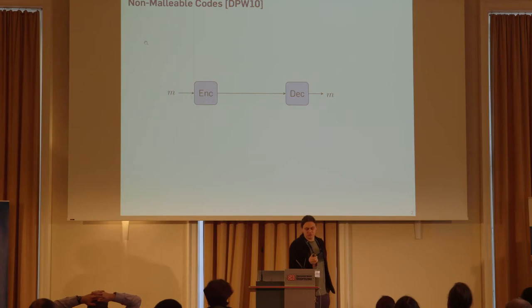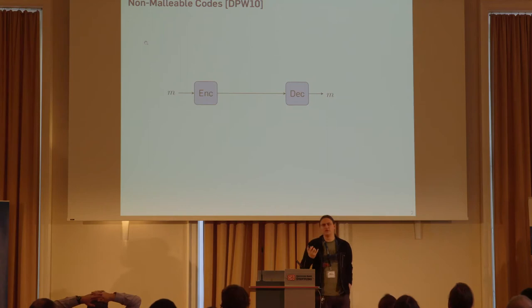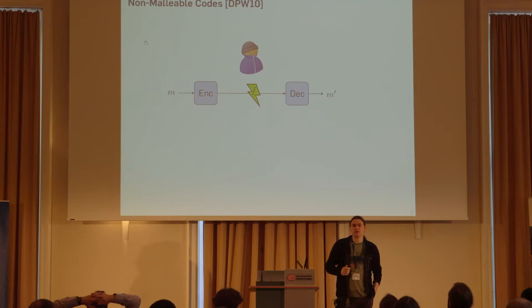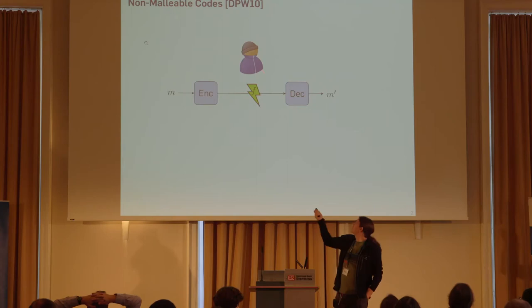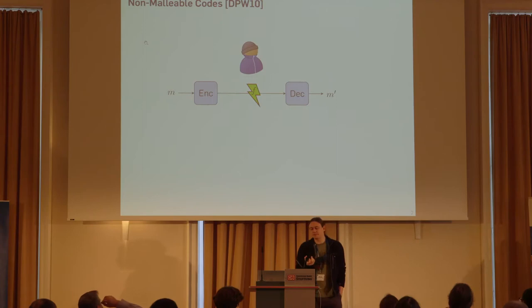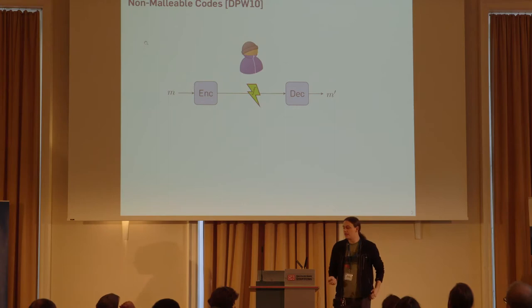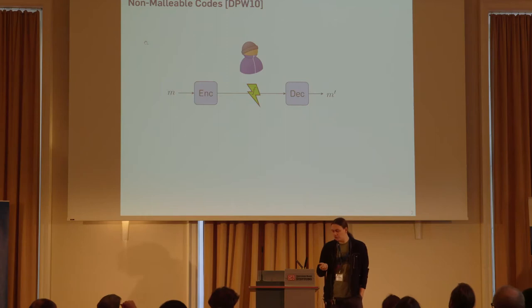The notion of non-malleable codes was first introduced by Cimbrowski, Piaczak, and Wix in 2010. It's basically a code: we have a message, we encode it, we can decode it again, and if the code works correctly, we get the same message back. But somebody could tamper with the code after it has been encoded. This attacker could use some tampering function f and change the code word, which might result in a different message m' being decoded. If this code were error-correcting, and if f falls into the class of functions against which the code is error-correcting, then we'd have a guarantee that m' is actually the same as m. However, if the code is not error-correcting, then this is not the case.